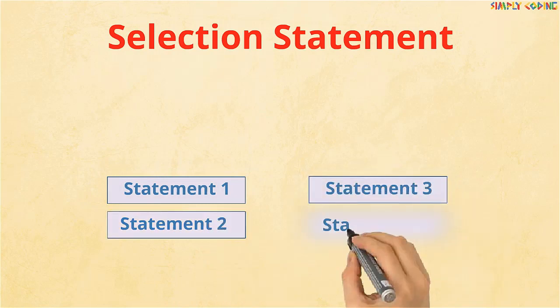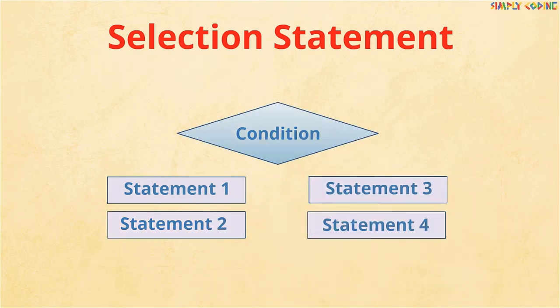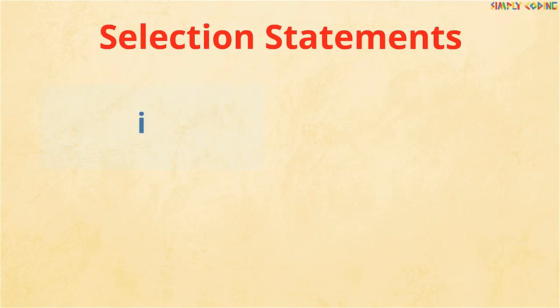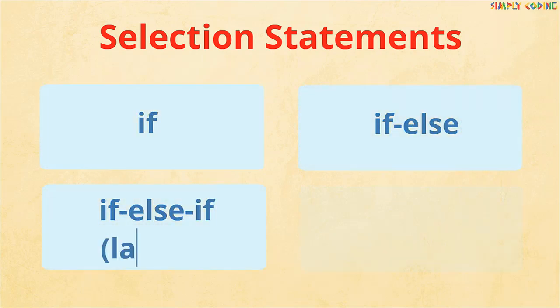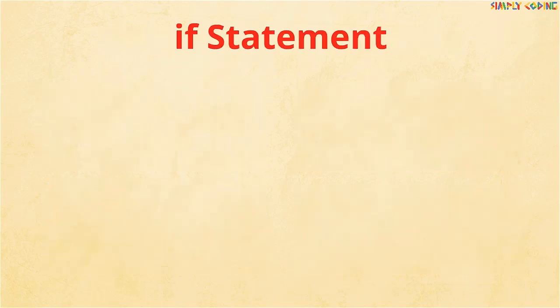A selection or decision-making statement means the execution of statements depends upon some condition. If a condition is true, execution moves to one set of statements; if it is false, it branches to another. Java supports the following selection statements: if, if-else, if-else-if ladder, and switch. Let's start by learning the if statement.